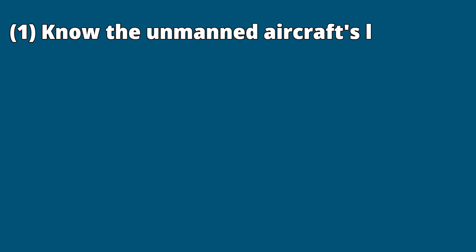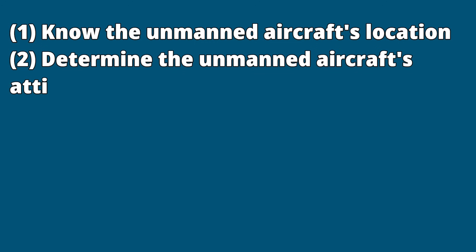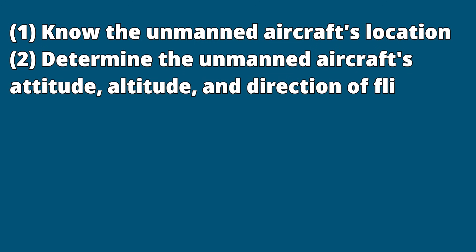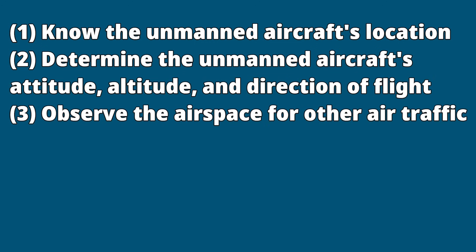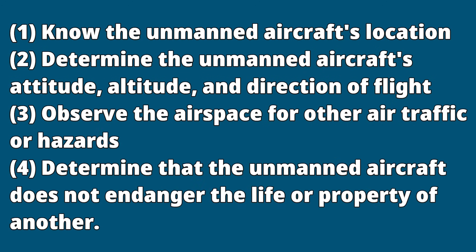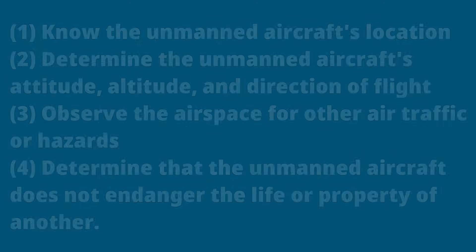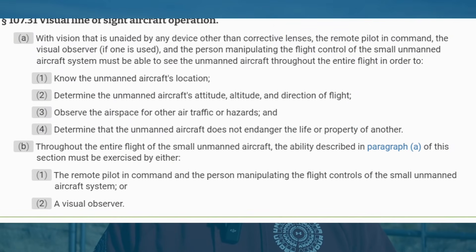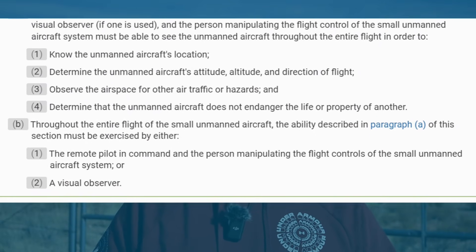This means that you can't use binoculars or a telephoto lens to comply with the rule, but you can use glasses or contacts if you need them. The rule says this is required in order to know the unmanned aircraft's location, determine its attitude, altitude, and direction of flight, observe the airspace for other air traffic or hazards, and determine that the unmanned aircraft does not endanger the life or property of another. This ability must be exercised by either the remote pilot in command and person manipulating the controls, or a visual observer, throughout the entire flight.